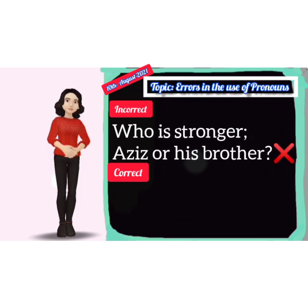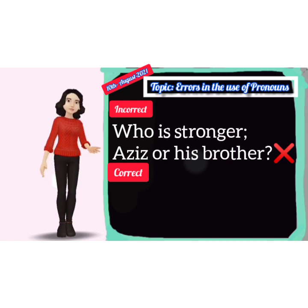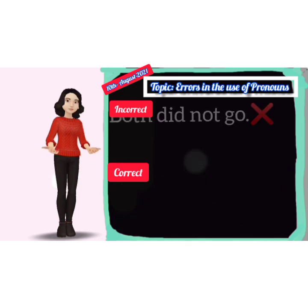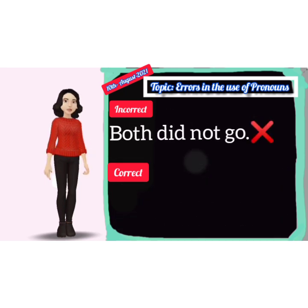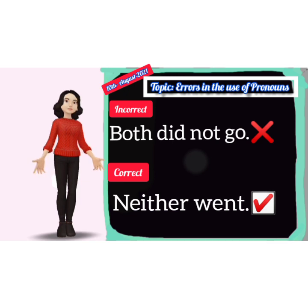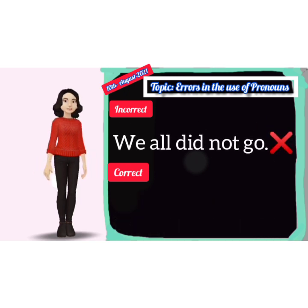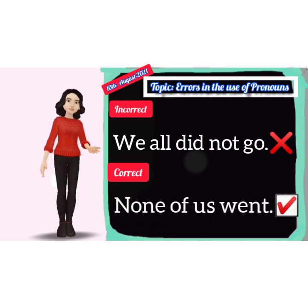Sixth: incorrect — 'Who is stronger, Aziz or his brother?' Correct — 'Which is stronger, Aziz or his brother?' Seventh: incorrect — 'Both did not go.' Correct — 'Neither went.' Eighth: incorrect — 'We all did not go.' Correct — 'None of us went.'